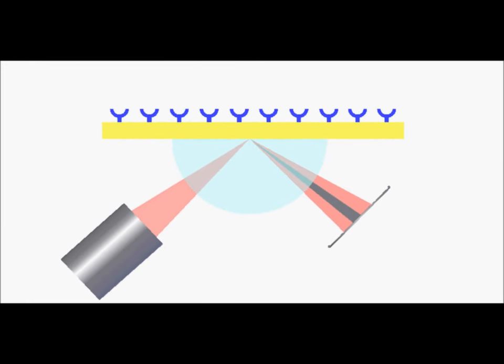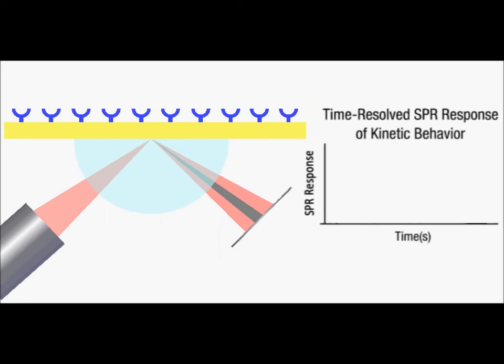Another powerful aspect of SPR technology is in its ability to observe the time-dependent binding interaction between molecules. By monitoring this change in SPR response over time, researchers can study the kinetics of molecular binding events. In the first example, an analyte with low affinity to the immobilized ligand on the sensor surface is introduced, and therefore, negligible binding interaction is observed.